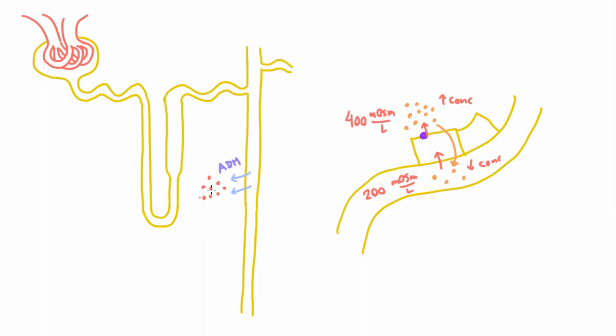But the thing is that if you actually go into the medulla here and you measure the concentration, it's not 400. It's actually as high as 1200 milliosmoles per liter. So it's much higher than you would be able to achieve using this method. So that means that the kidney is actually up to something more intelligent than this.